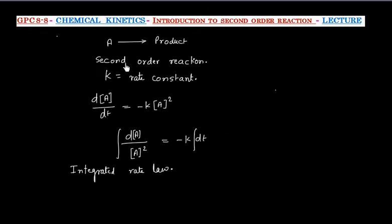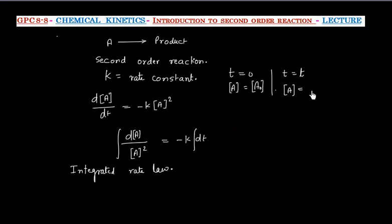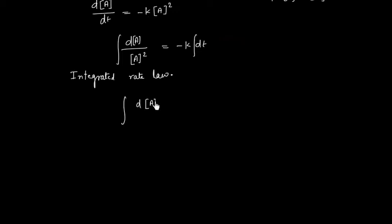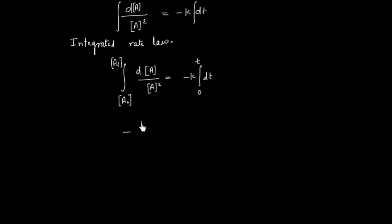At t equal to 0, the initial concentration of A is A₀. At t equal to T, the concentration of A is Aₜ. We integrate the equation from A₀ to Aₜ, and time goes from 0 to T. The integral of 1 over A squared is minus 1 over A, evaluated from A₀ to Aₜ, and this equals minus k times T.